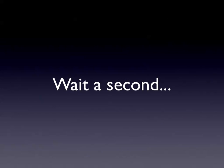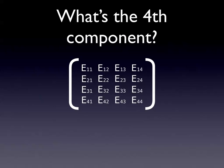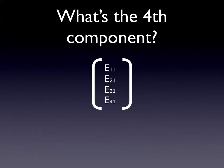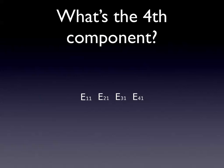The fourth component. All translations, scales, and rotations can be represented with just a 3x3 matrix - elements E1 to E33. So what's the fourth component for? This fourth one can be used to represent depth or perspective, and it's used in OpenGL for basically what you can think of as the camera.